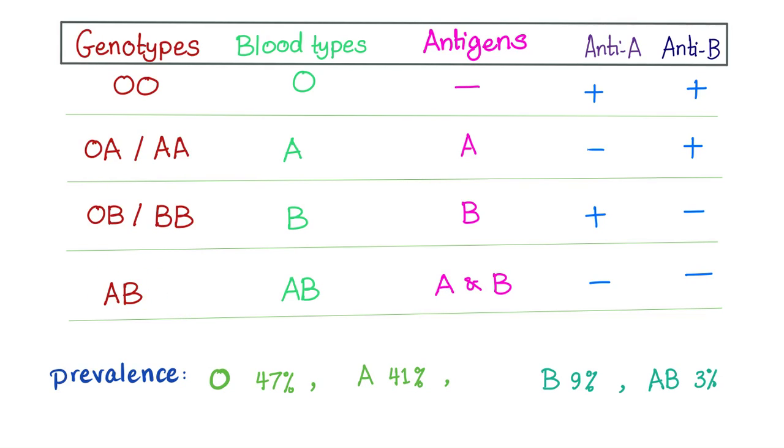The genotype is AB. The phenotype is AB. Antigens A and B. Antibodies? No. If I have antibodies, I will destroy myself. How about the prevalence of the blood types in the general population? It differs among countries, but generally in the United States, 47% are blood group O, 41% blood group A, 9% blood group B, 3% blood group AB. Is it O negative or O positive? This is the story of the RH system in the next video.